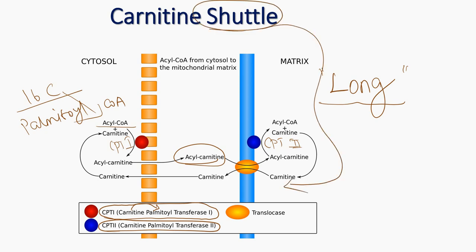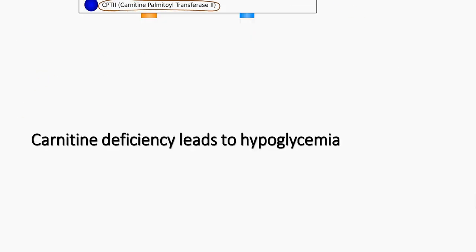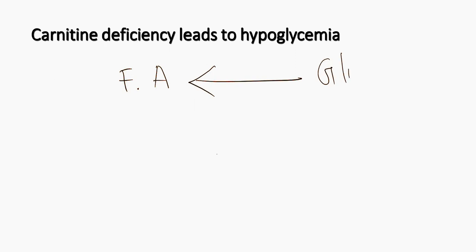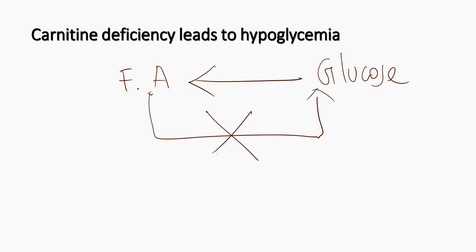This is a shuttle, meaning carnitine is reused. This next point is very important: carnitine deficiency leads to hypoglycemia. We all know that fatty acids can be produced from glucose, but fatty acids cannot be converted into glucose. Only odd-chain fatty acids can produce glucose; otherwise, fatty acids cannot produce glucose.